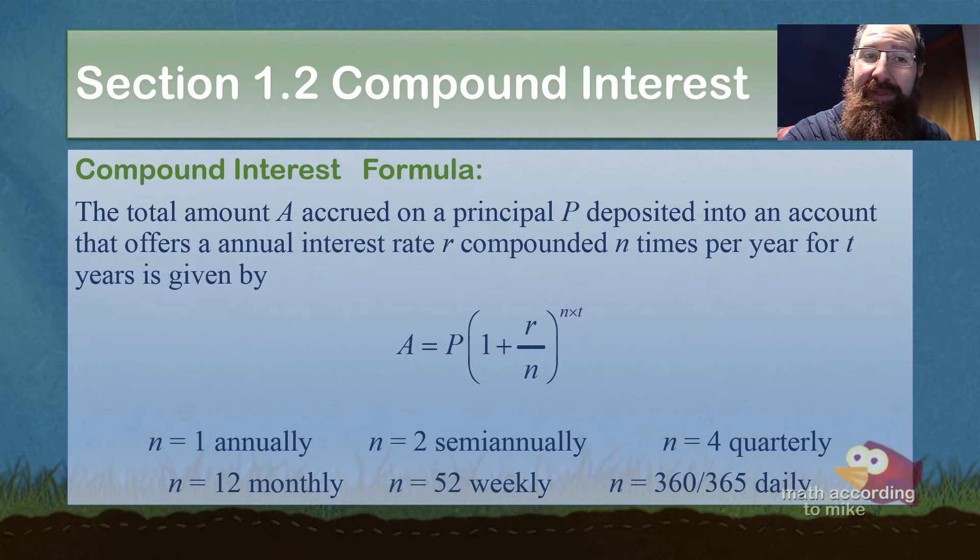n equaling 4 is quarterly, n equaling 12 is monthly, 52 is weekly, and 360 or 365 is daily.